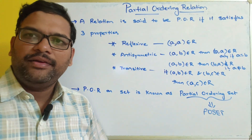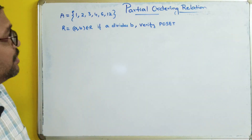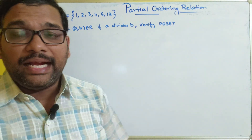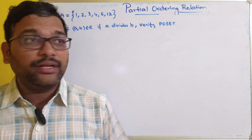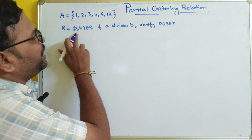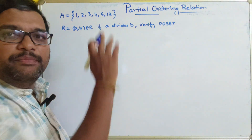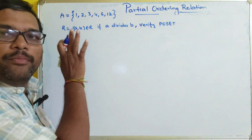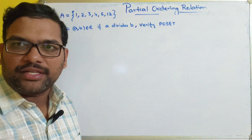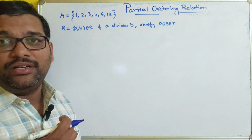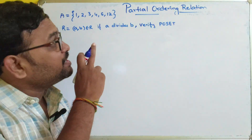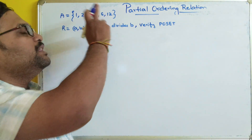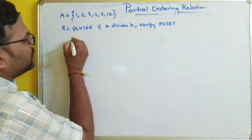Let us solve one example. Set A has elements {1, 2, 3, 4, 6, 12}. Here the relation is not given directly, so we have to identify it. We have to form a pair (a, b) which belongs to R only if a divides b. We have to find all such pairs and then verify that the set is a poset, meaning we check whether the relation is a partial ordering relation.